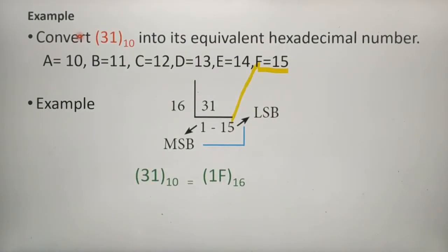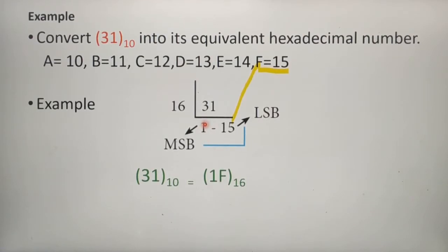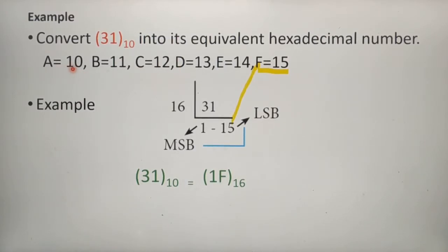Let's convert decimal 31 to its hexadecimal equivalent. Divide 31 by 16 — quotient is 1 and remainder is 15, since 1 sixteen is 16. The new quotient 1 is less than 16, so we stop. One important thing: if any value is greater than 9, we convert it to an alphabet. So 10 = A, 11 = B, 12 = C, 13 = D, 14 = E, and 15 = F. So instead of 15, we write F.